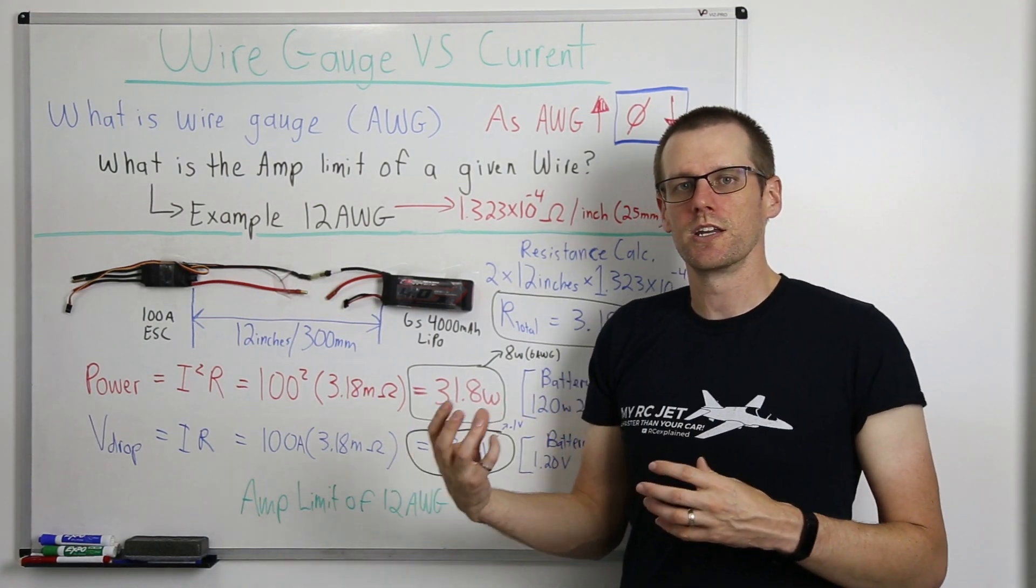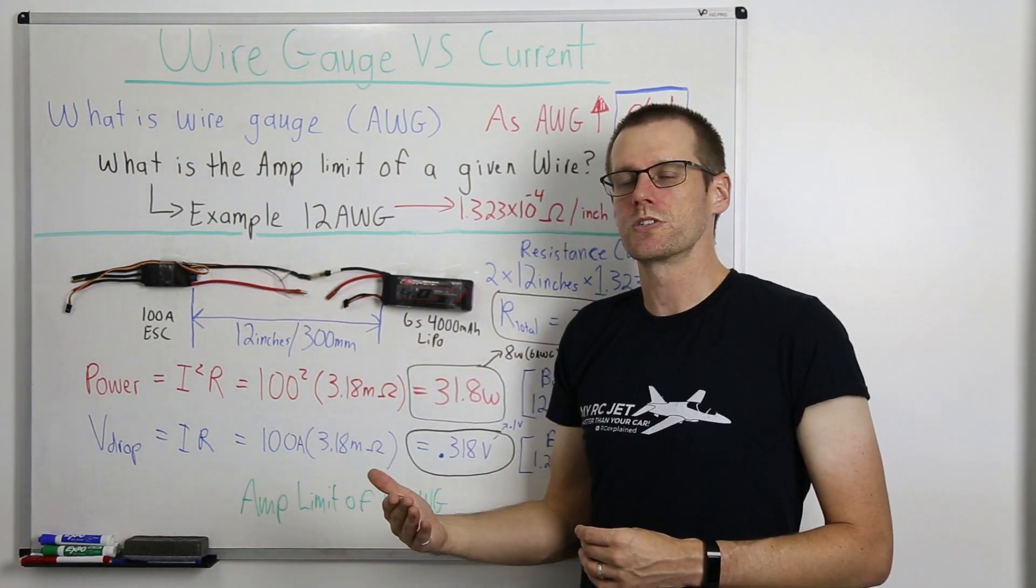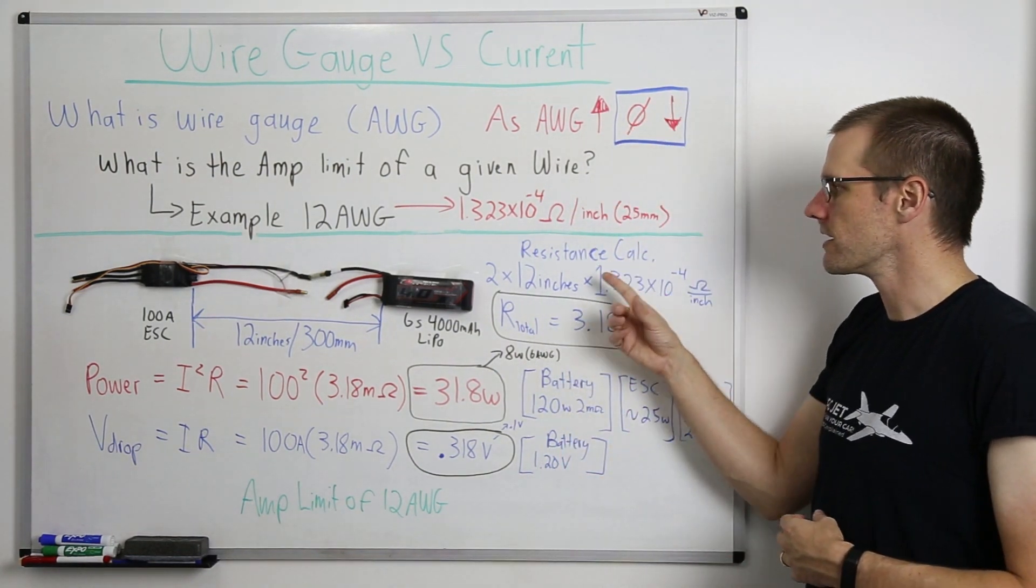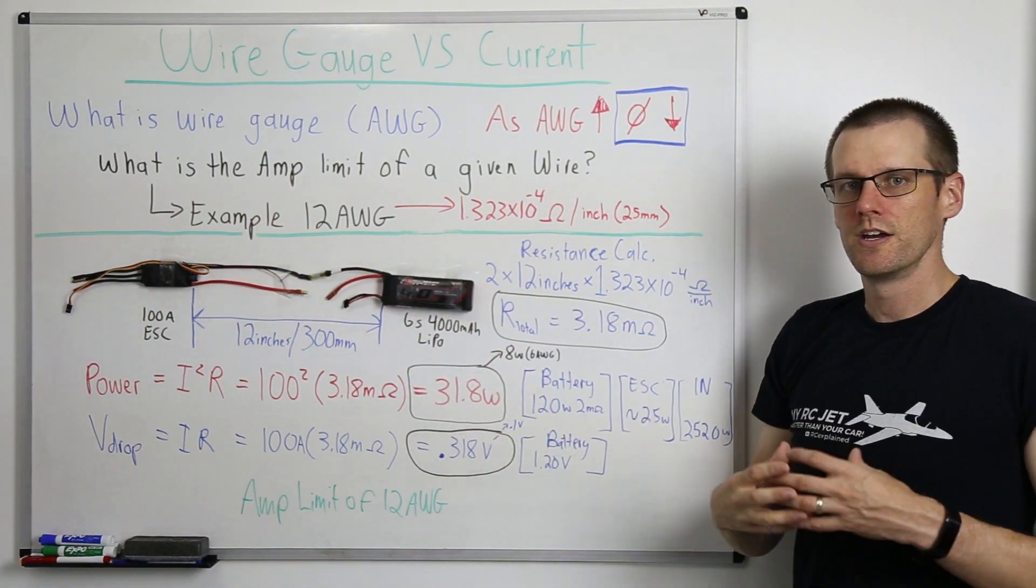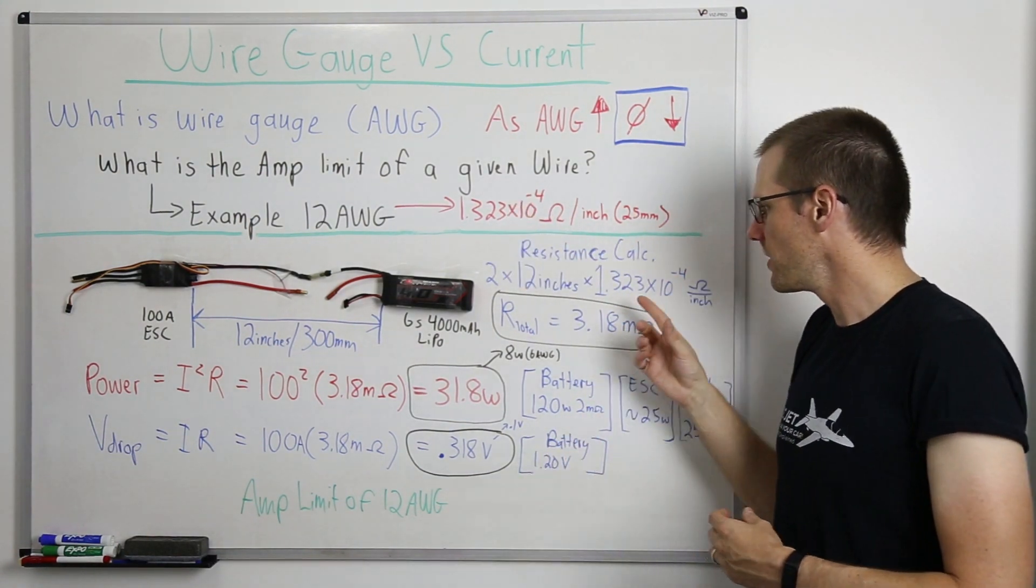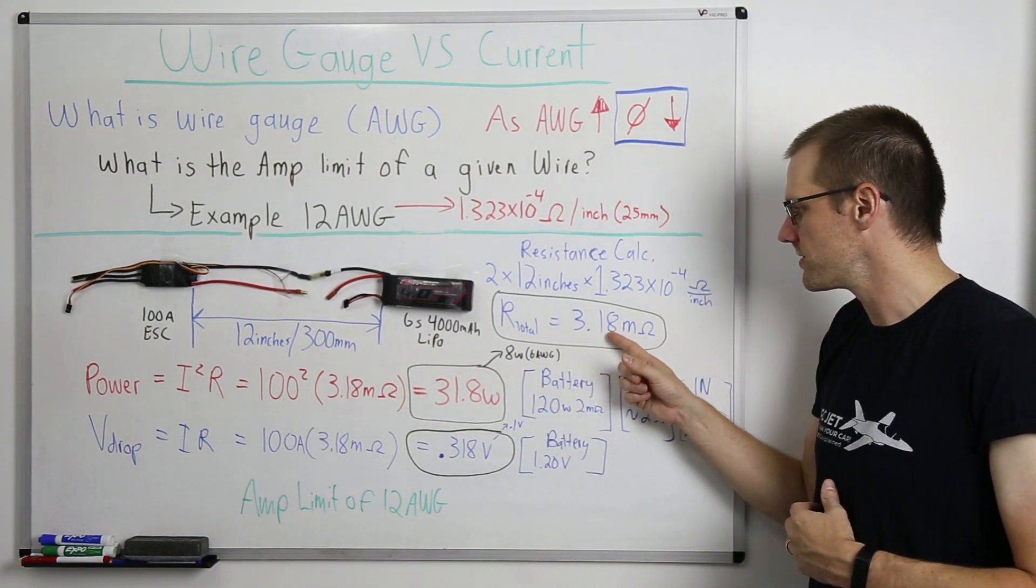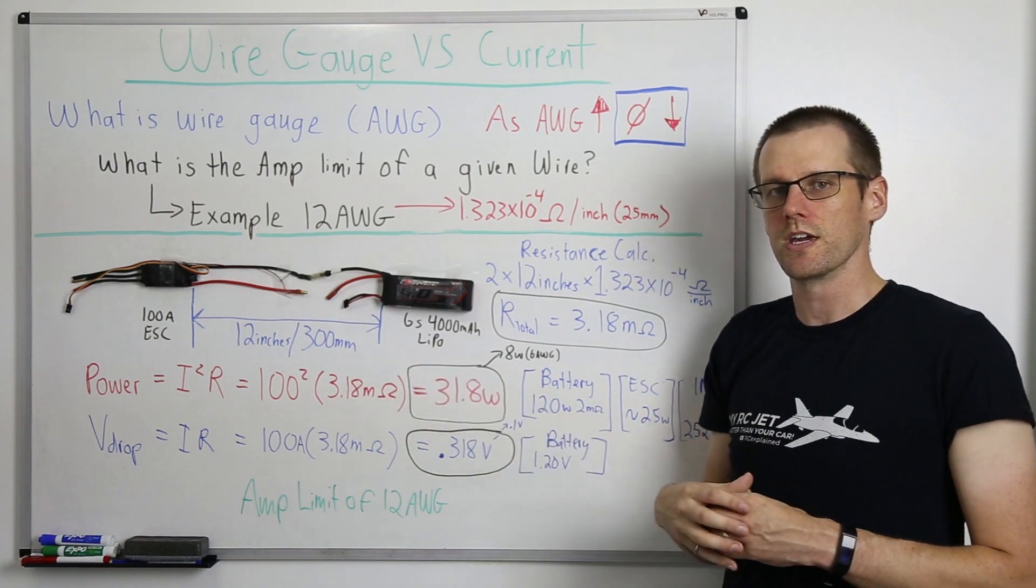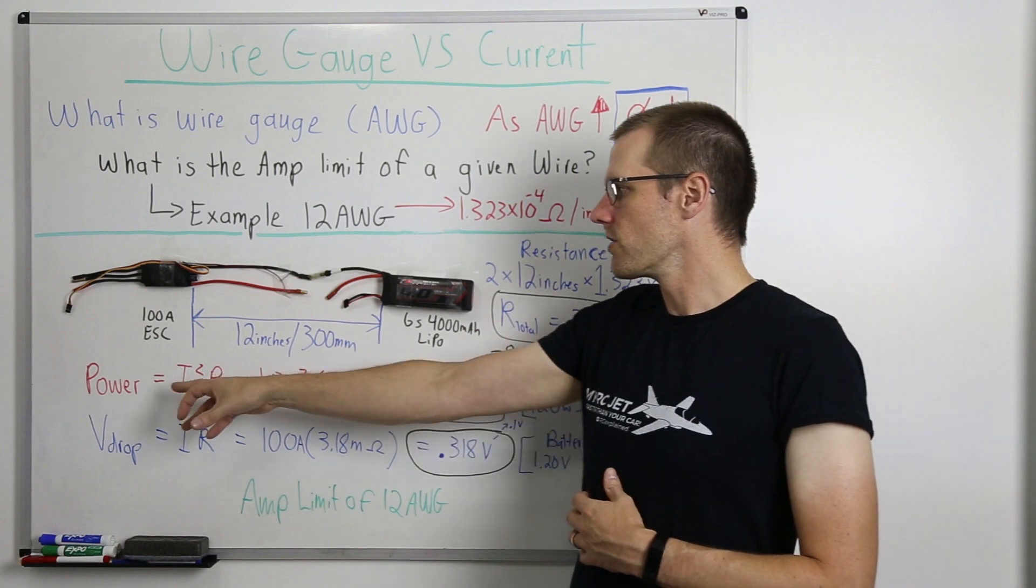So the first thing that we want to do is understand what this means in terms of resistance. The only component that we care about with the wire is how much resistance and what are the drawbacks from that resistance that we'll see later. So the resistance calculation is simply taking our 12 inch run, multiplying it by two because we have two sets of that wire length, and we multiply it by our resistance per inch. This way we get a total resistance of 3.18 milliohms. Now it's important to note that I do put this in engineering notation. This is milliohms. If you want to make calculations that we'll do here very shortly, this is 3.18 times 10 to the negative 3 ohms.